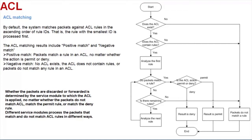Whether the packets are discarded or forwarded is determined by the service module to which the ACL is applied. No matter whether the packets do not match an ACL, match the permit rule, or match the deny rule, different service modules process the packets that match and do not match ACL rules in different ways.